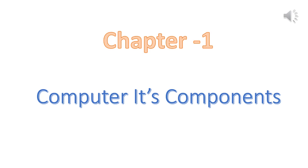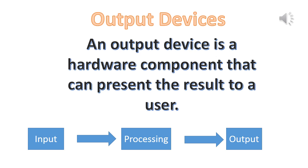Chapter 1: Computer, Its Components. Output Devices. An output device is a hardware component that can present the result to a user. When we give input to a computer through input devices, it goes to the processing unit, which is called CPU. After processing, the result is prepared and we can see it on output devices.